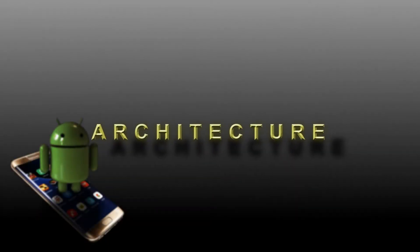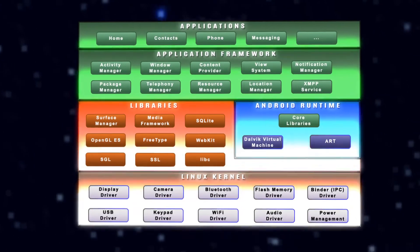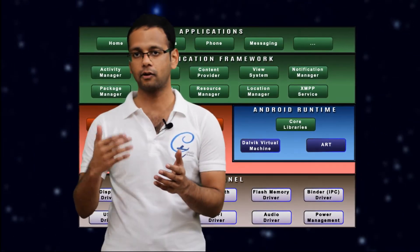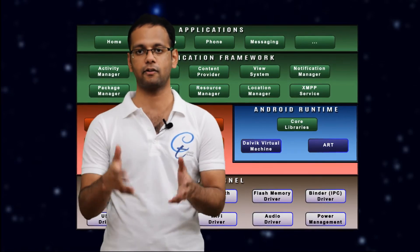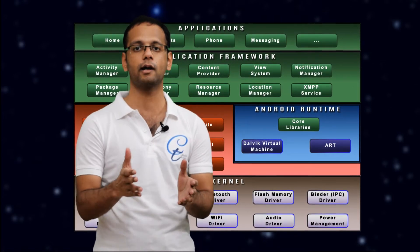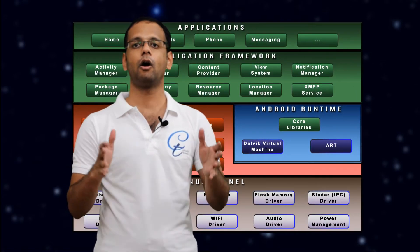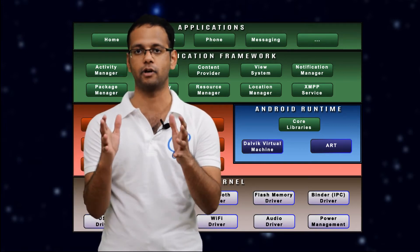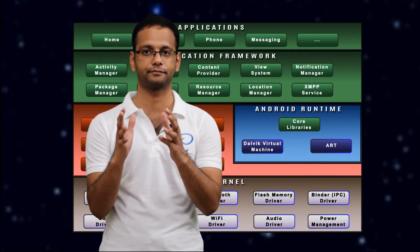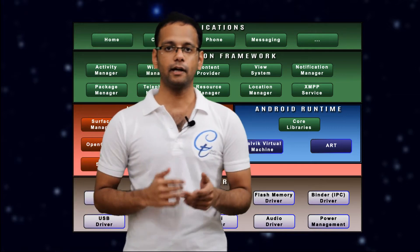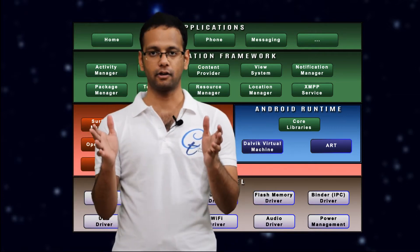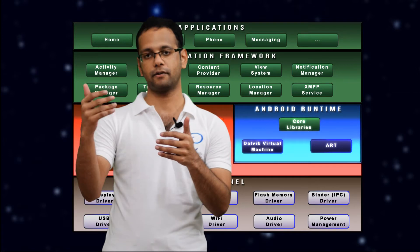Today I will give you a brief introduction about the architecture of the Android operating system. As I told you, Android is a software stack — it has everything from the firmware to the middleware to the application level, all components encapsulated into one Android custom ROM. If you look at the Android architecture, we have three or four basic layers.